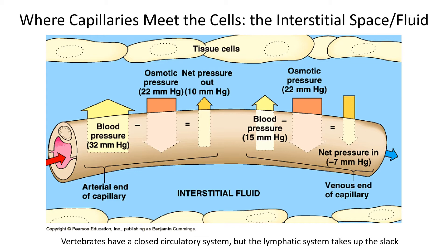The circulatory system in vertebrates is a closed system — the blood is always contained within vessels or chambers. Blood leaves the heart through arteries, then arterioles, then into capillaries, then is recollected into venules and then veins and returns to the heart. The blood is always enclosed by a chamber or vessel and is never free to simply seep between the cells of a tissue. That's not the case in invertebrates, where fluid that leaves the heart seeps between tissues and is eventually recollected. Having blood always travel through tubes speeds things up considerably and means vertebrates can supply more oxygen and metabolites at a higher rate.